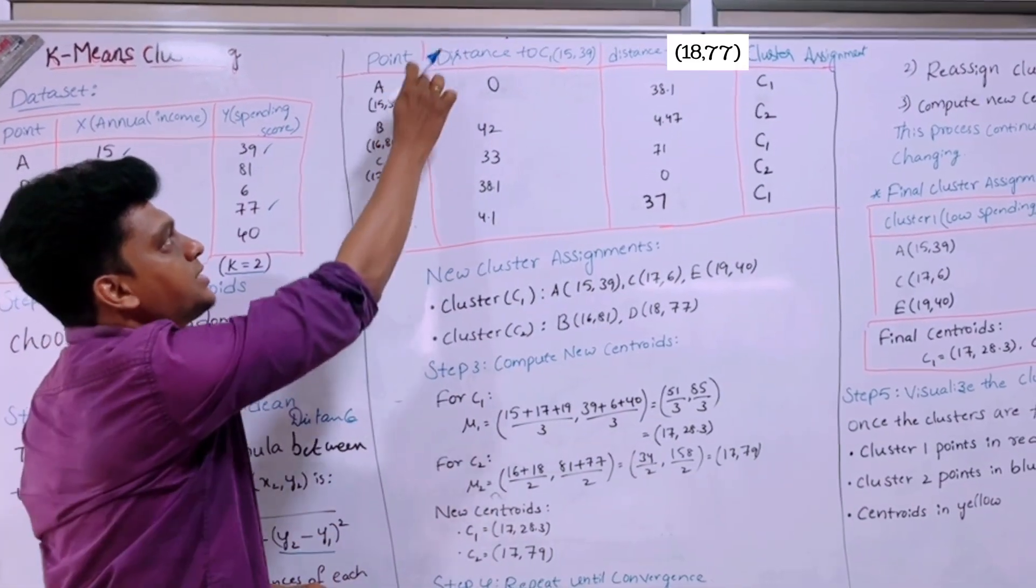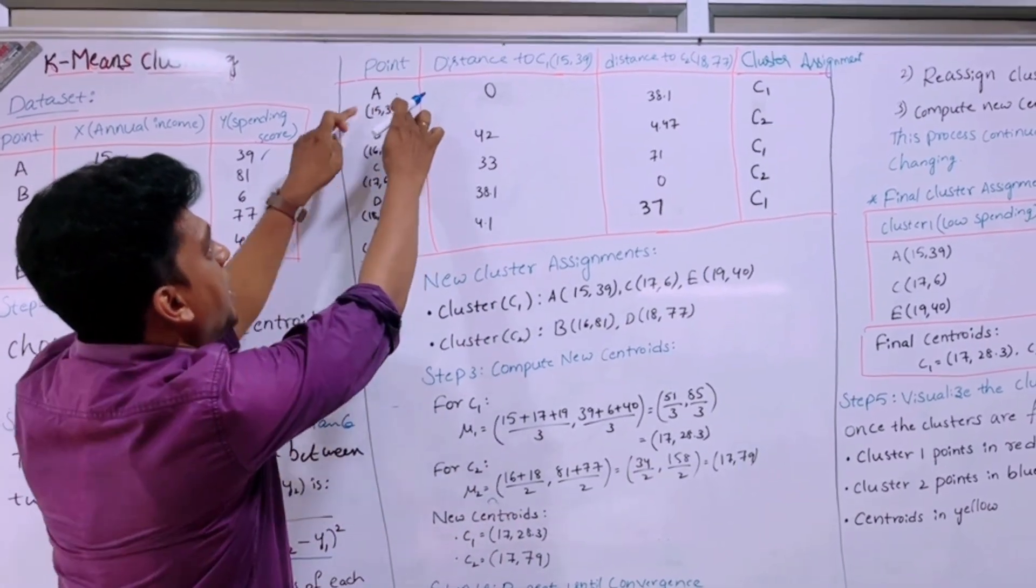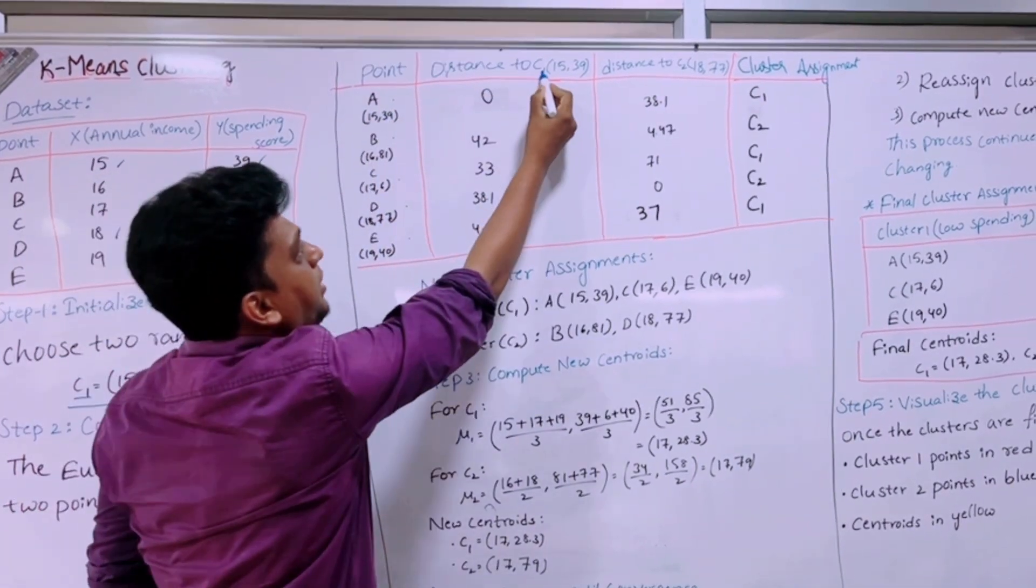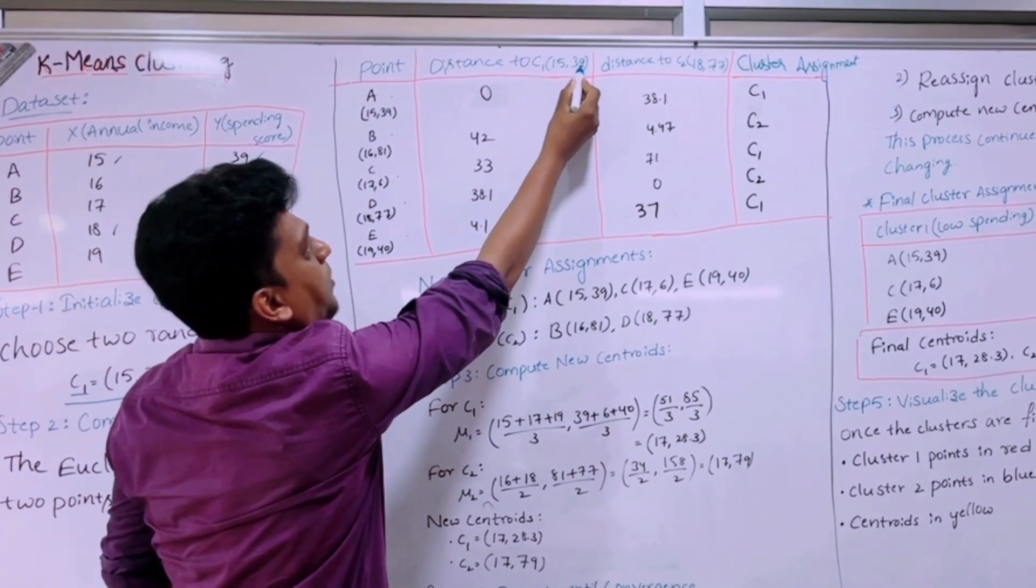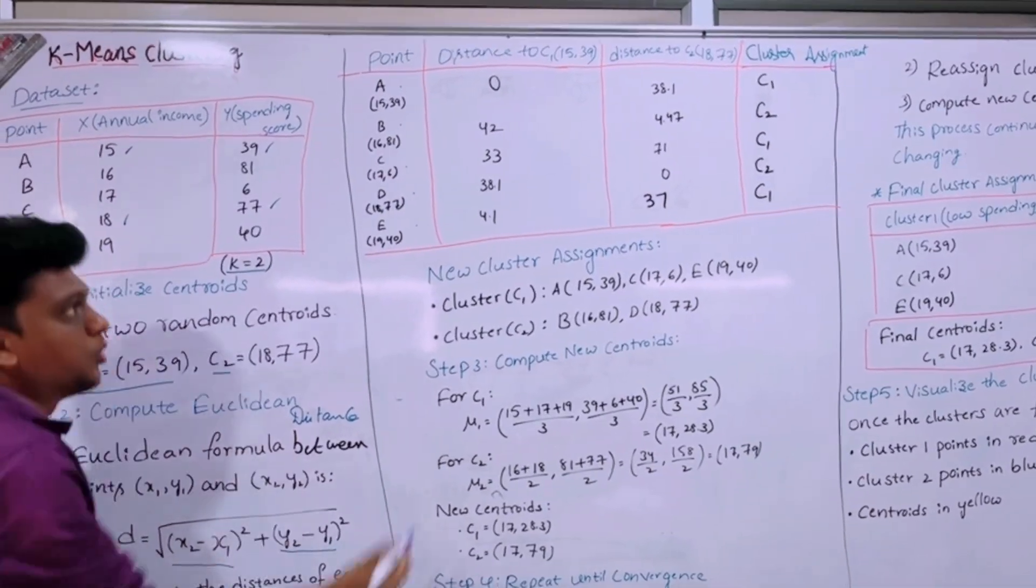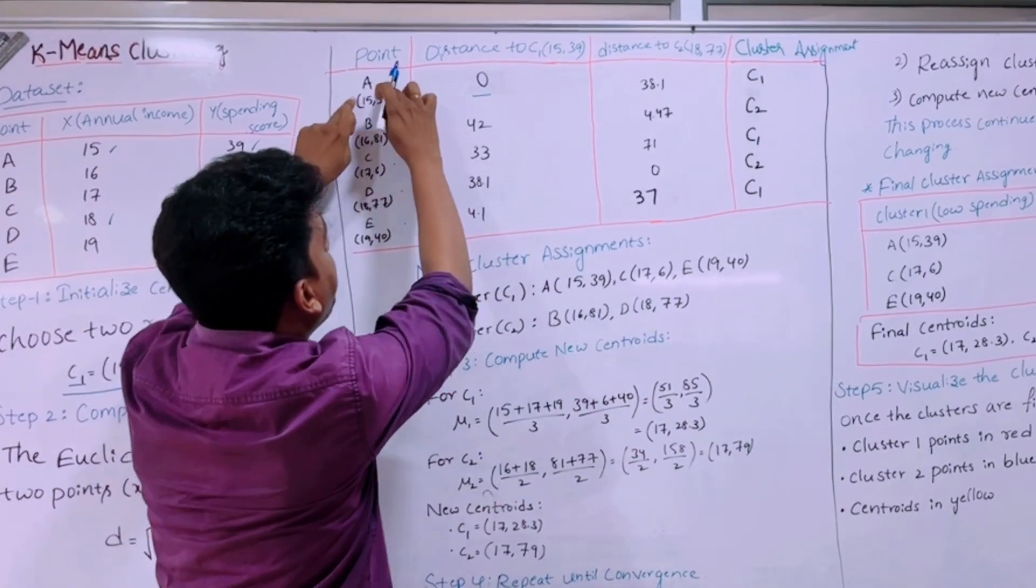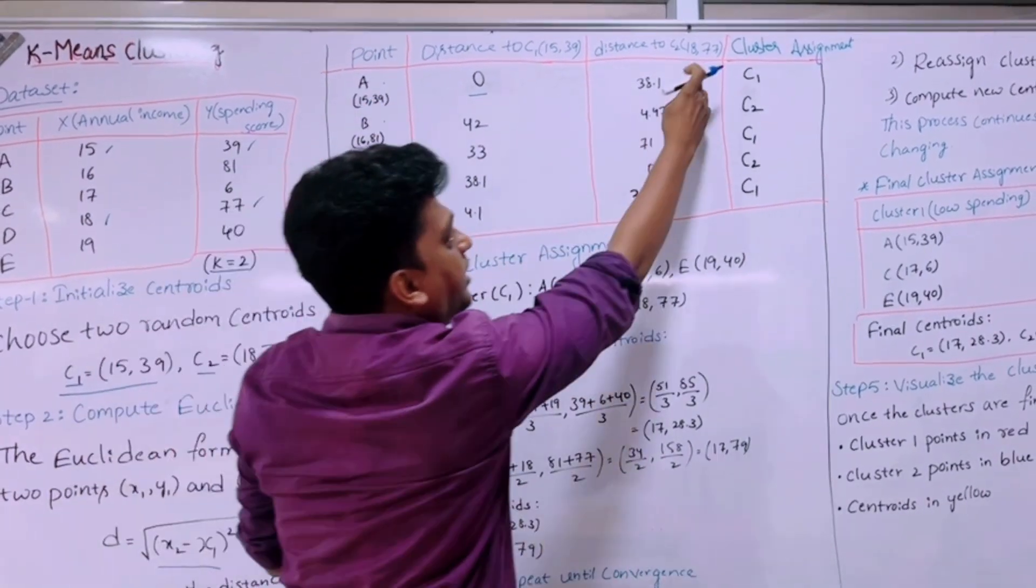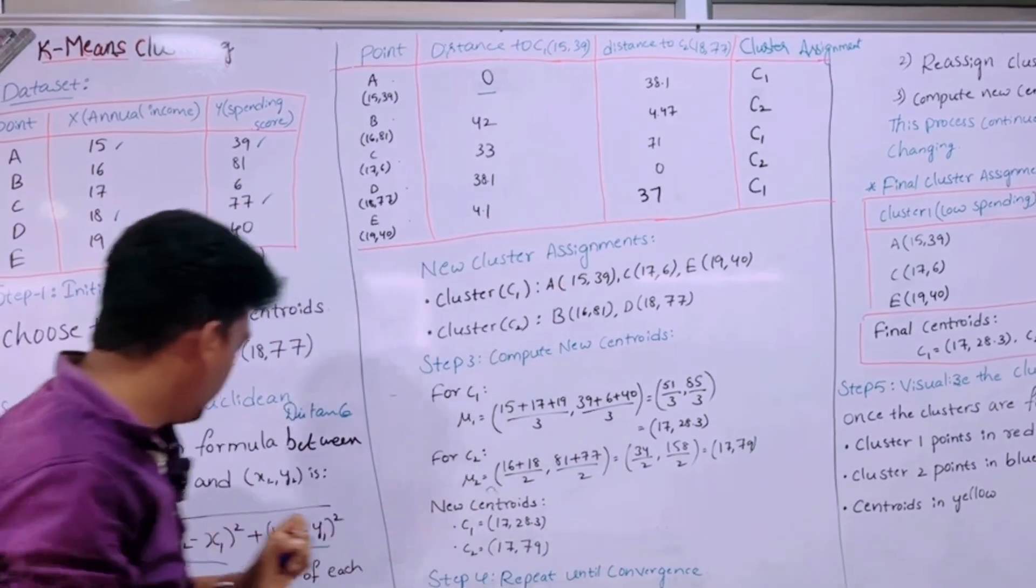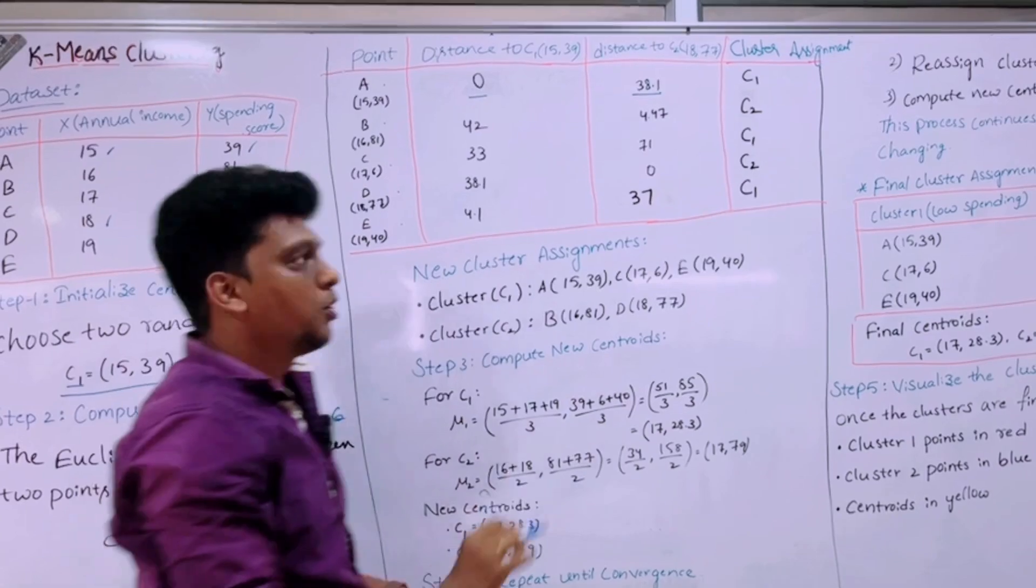Now we should compare the distance between the two points. So first we should take this point and this point. So for A, 15,39 and we can take as 15,39, while we are calculating we are getting the value as 0. So keep it here. Then here distance between this point 15,39 and that 18,77, it should be calculated using the same formula. So I am getting 38.1.